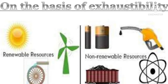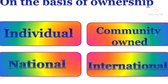On the basis of ownership, resources are divided into four categories: individual resource, community resource, national resource, and international resource. Individual resources are property belonging to individual persons — for example, a farmer's land or a house in an urban area.